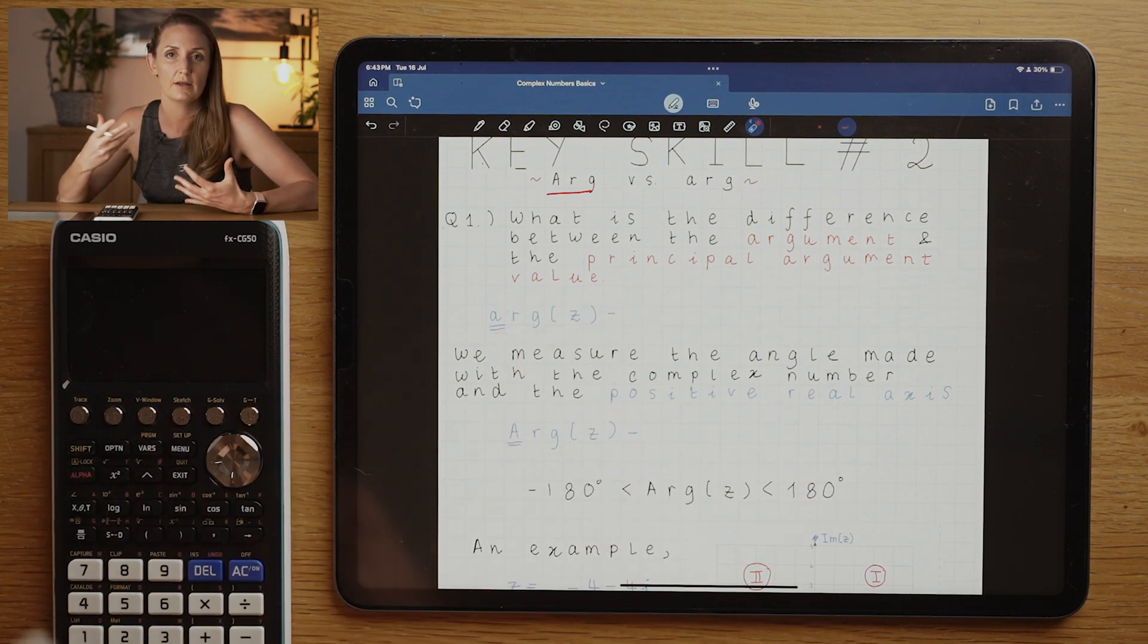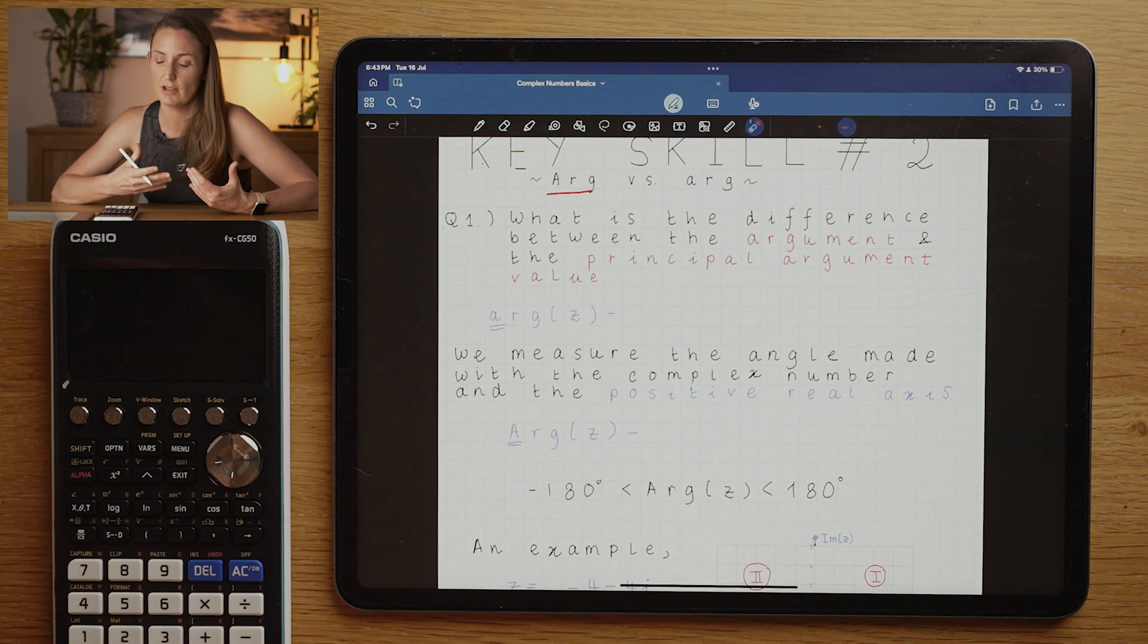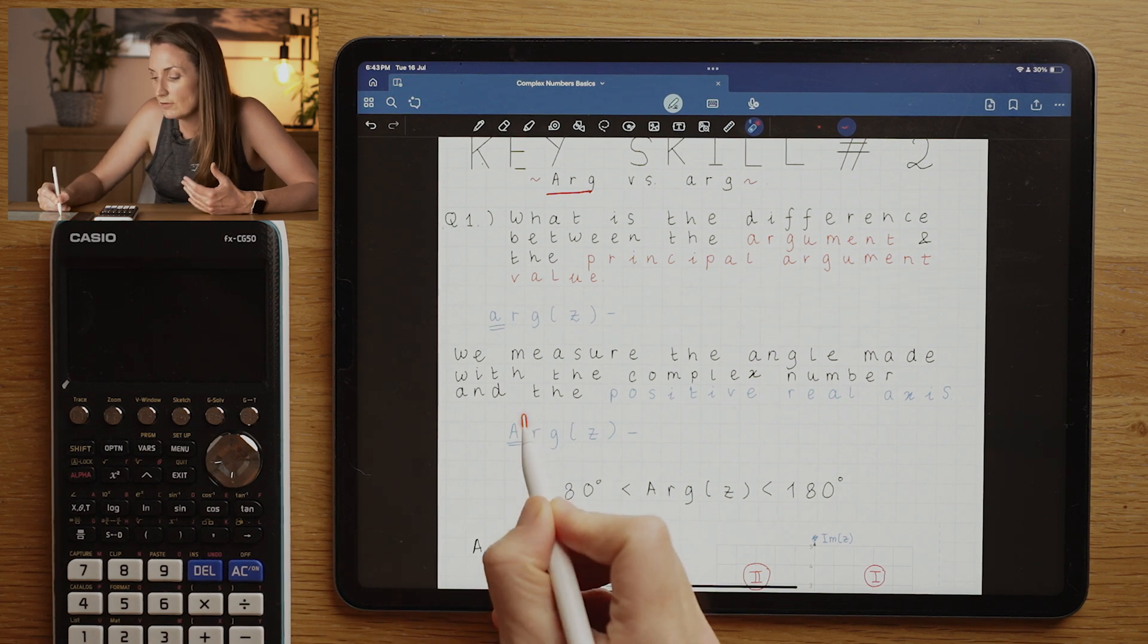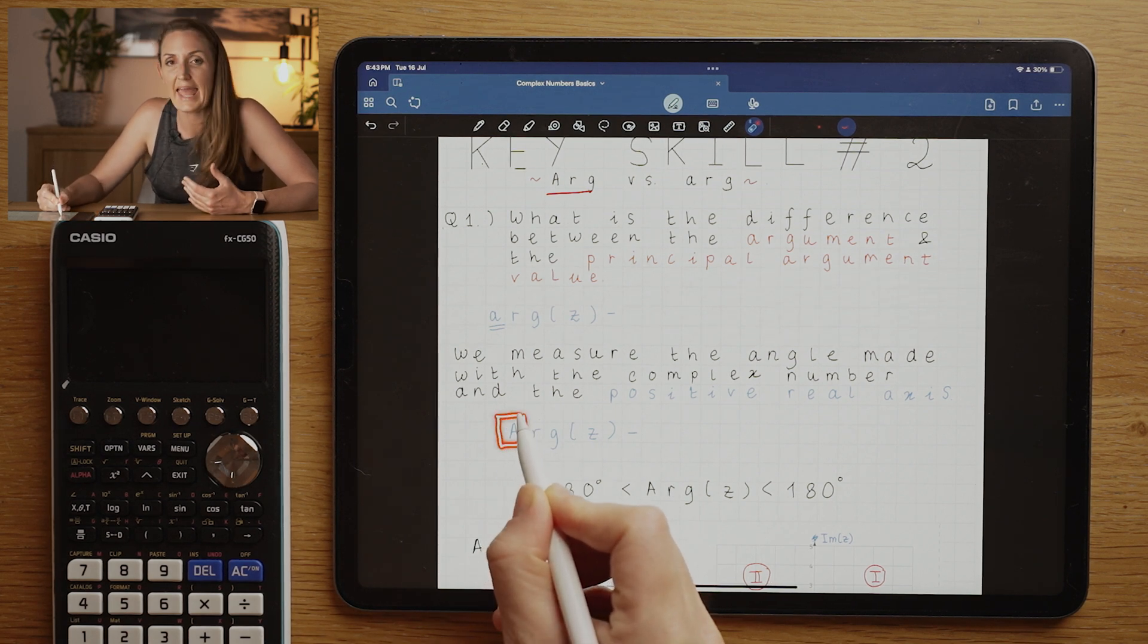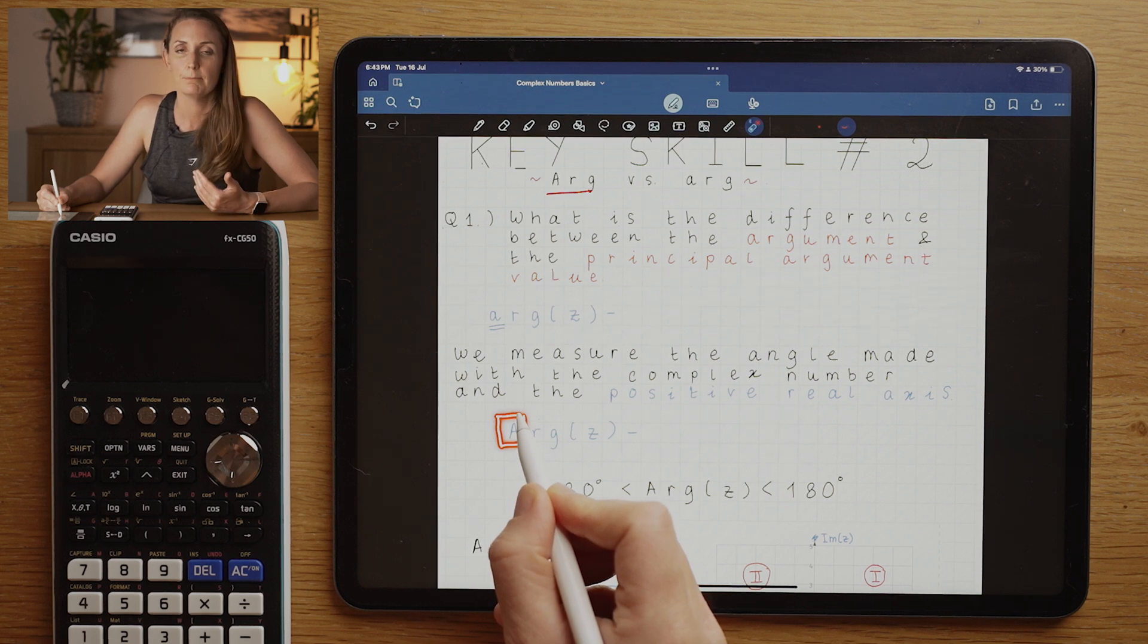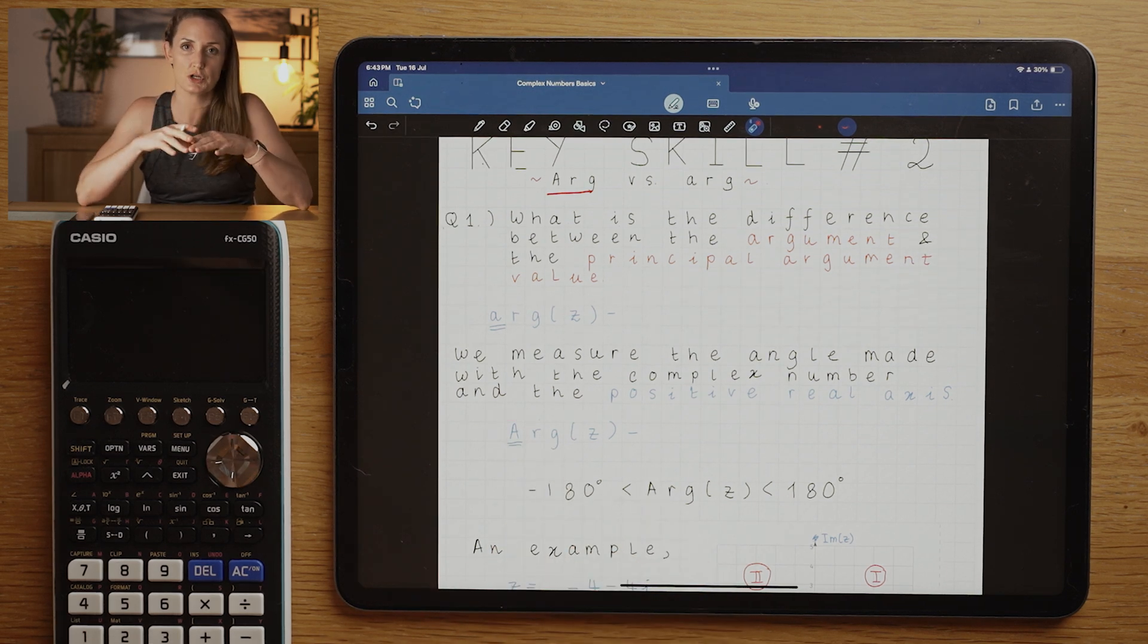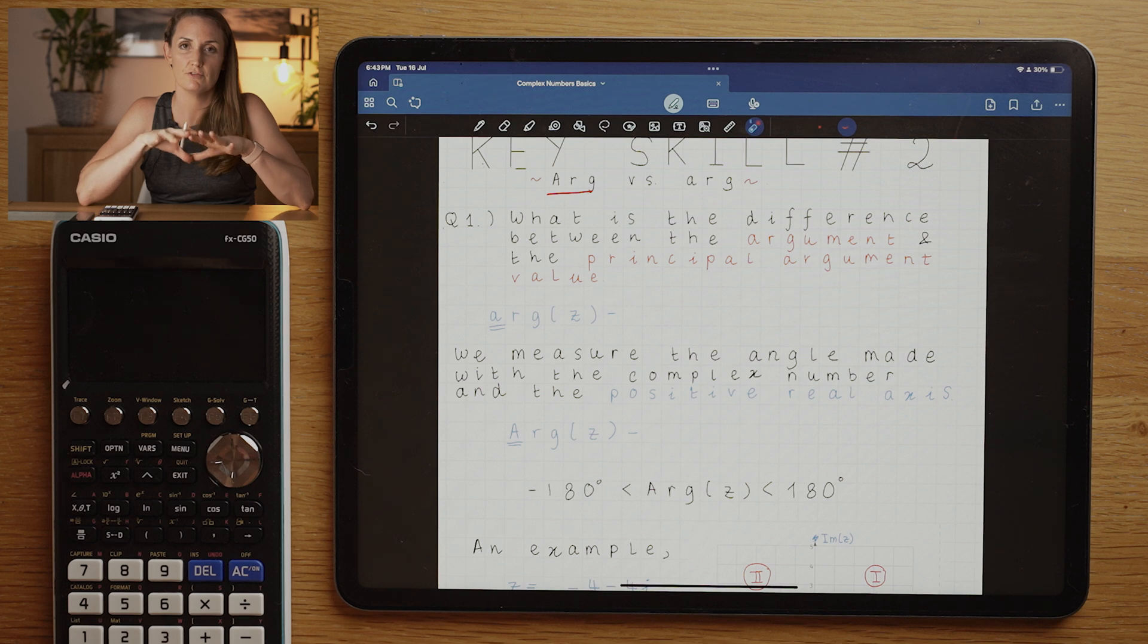You can calculate it using SOHCAHTOA like we did in the previous ones, but if you see a big A or a capital A, that means there is a restriction on the range of values you're allowed to use for that angle.